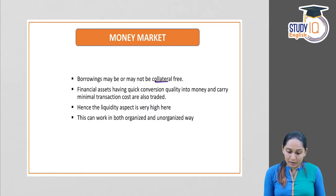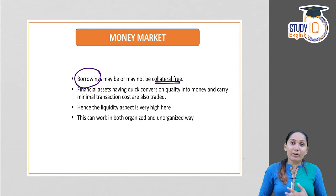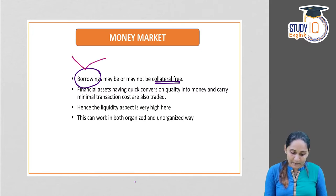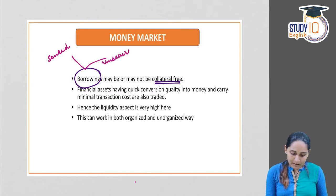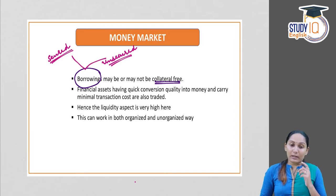Borrowings in the money market may or may not be collateral-free — that is, borrowings can be secured or unsecured. Secured borrowings are those guaranteed by a collateral. Unsecured borrowings are those which are not guaranteed by a collateral. So there are two types of borrowings: secured and unsecured.